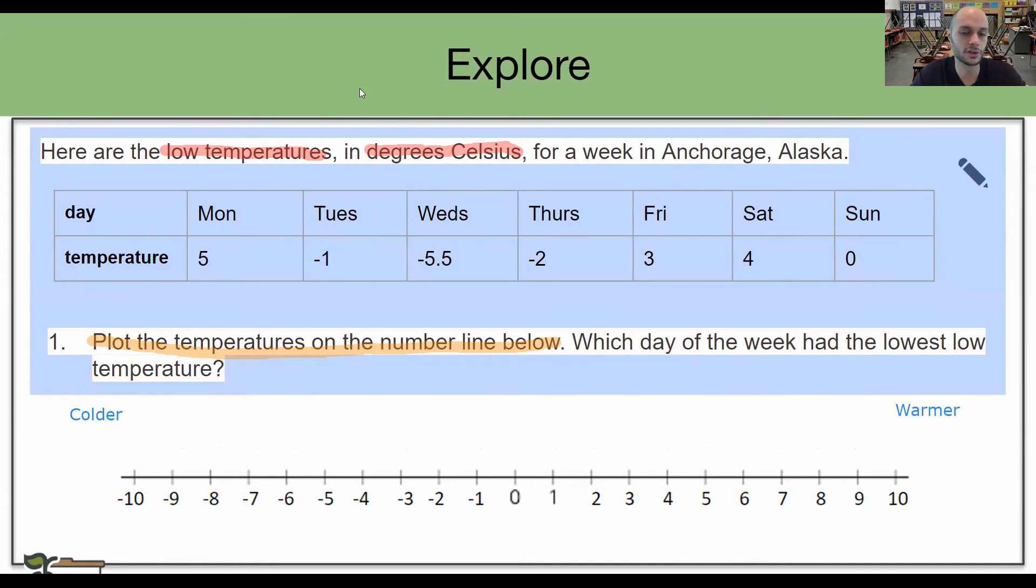Let's plot the temperatures. I'm going to use letters for the days. I'm going to use M for Monday, TU for Tuesday, W for Wednesday, TH for Thursday, F for Friday, SA for Saturday, and SU for Sunday. Let's take that information and plot it on our number line. Monday, it says the temperature was five degrees Celsius. So I'm going to find my five. Here it is. Five degrees Celsius. Monday. Next, Tuesday is negative one. Let's find negative one. Here's negative one. Let's put Tuesday TU. Here we go. Let's keep moving.